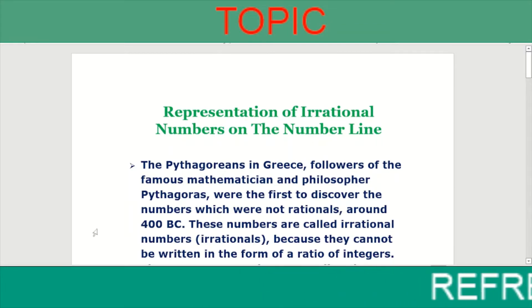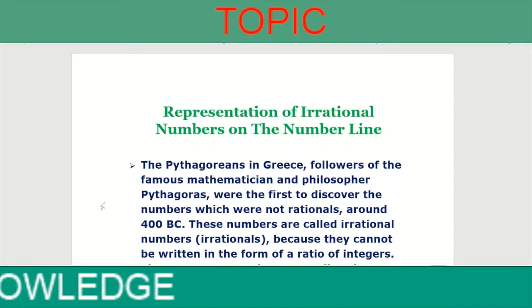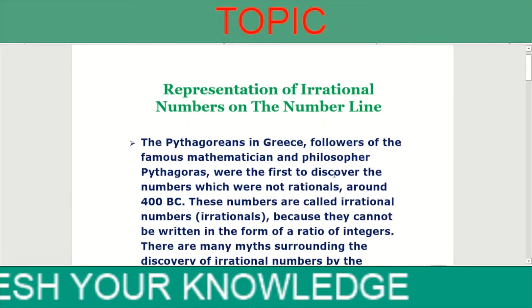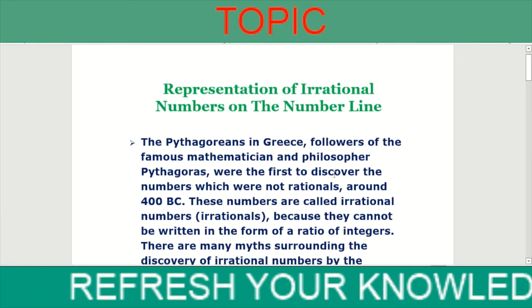Pythagoras, the Pythagoreans in Greece, followers of the famous mathematician and philosopher Pythagoras, were the first to discover the numbers which were not rational, around 400 BC.